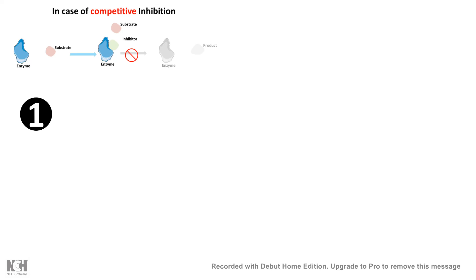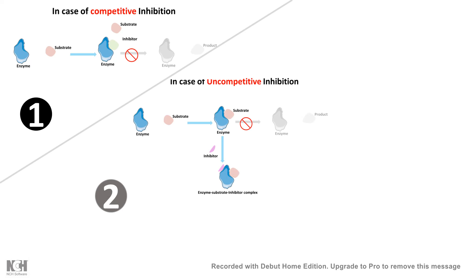In competitive inhibition, the substrate and the inhibitor compete for the enzyme's active site. The substrate and the inhibitor have a striking similarity such that both can fit into the active site of the enzyme. The inhibitor binds to the enzyme instead of substrate, creating an enzyme-inhibitor complex, and that's why the reaction does not proceed further and does not lead to product formation.